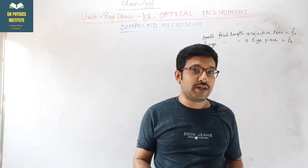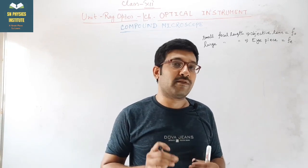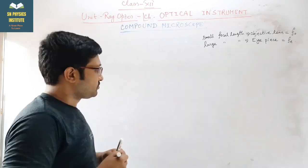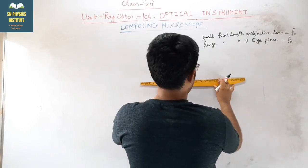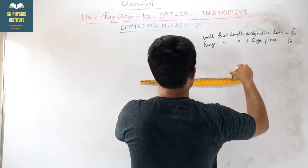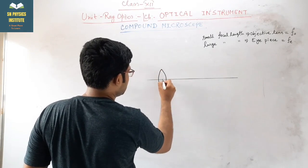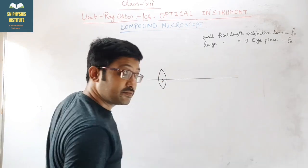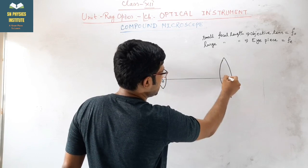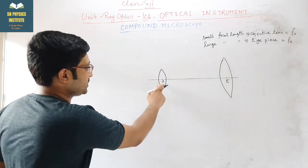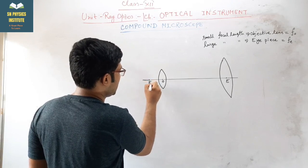These two lenses are used in the compound microscope. Let's draw the ray diagram and then calculate the magnifying power. So here I am drawing the principal axis. This is one lens with small focal length - it is known as the objective lens. And another one here is the eyepiece.